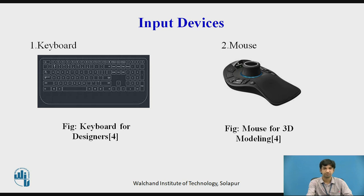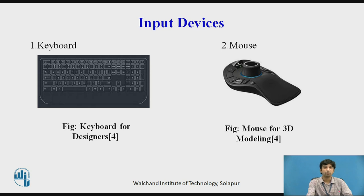The second input device is the mouse. The basic principle on which a mouse works is that there is a ball, and under the ball we have XY transducers which are fixed — essentially X and Y variable resistors. If you move the mouse in the X direction, the resistance of the X variable resistor will change; if you move it in the Y direction, the resistance of the Y variable resistor will change. This resistance is taken as the measure of the position of the mouse.